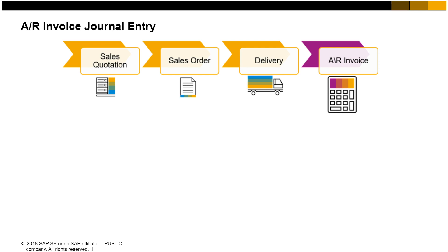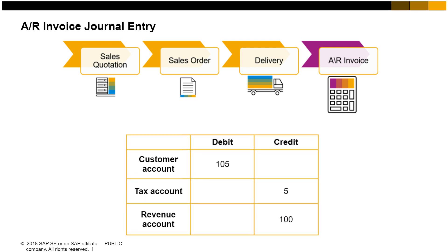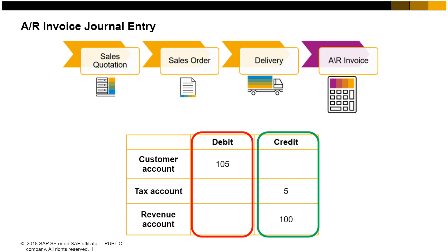In SAP Business One, a journal entry is automatically posted for many documents during the sales, purchasing, and inventory processes. Now let us assume for a moment that we are in a non-perpetual inventory system in order to keep our example simple. In that case, in our sales process example, the AR invoice automatically creates the following journal entry: there is a debit to the customer account for the total price of the sale, a credit to the tax account for sales tax, and a credit to the revenue account for the sales price excluding tax.